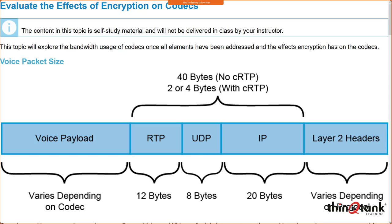You might wonder: if RTP header compression shrinks 40 bytes down to 2 to 4 bytes, why not always use it? Because compression takes processing power and time. If you're not seeing any loss or issues without compression, why add processing overhead when it's unnecessary? This is a UDP-based media stream — not the SIP control or skinny control, which is TCP-based.